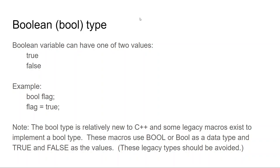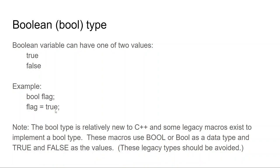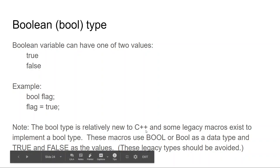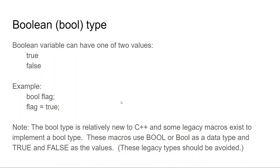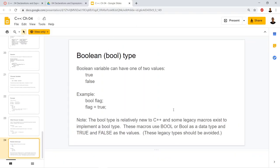The Boolean type is either true or false — really straightforward. In other programming languages, T and F are sometimes capitalized; not true here in C++. We declare it as bool flag, then flag equals true. It can only be true or false, not anything else. The bool type is relatively new to C++ and in lowercase is B-O-O-L. Good luck on chapter four — you guys are going to do great.